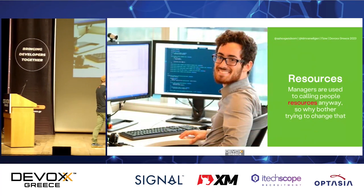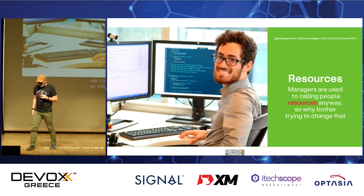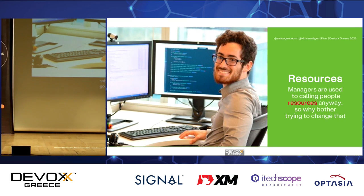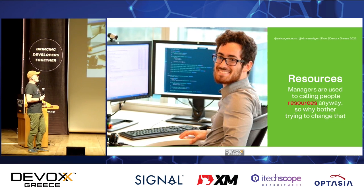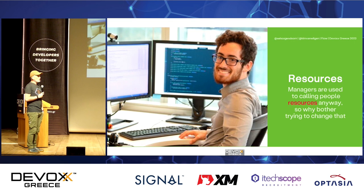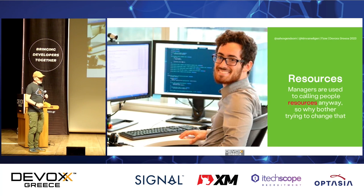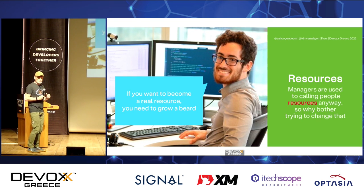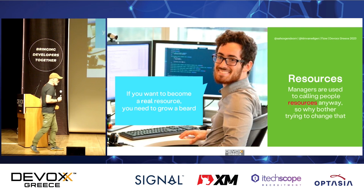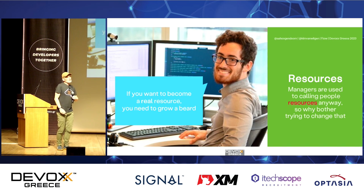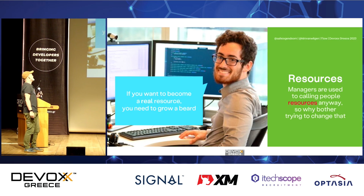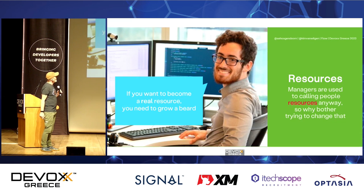Then we have to talk about people — or as managers call them, resources. How many resources do you need? The management team asks: 'how many resources do we need to do this?' — meaning computers? People? Tables? Chairs? They call us resources anyway, so let's just all be resources. I think in flow, if you want to be a resource, you need to have a beard. Flow is inclusive — women can have beards too. And then there are these agile coaches.